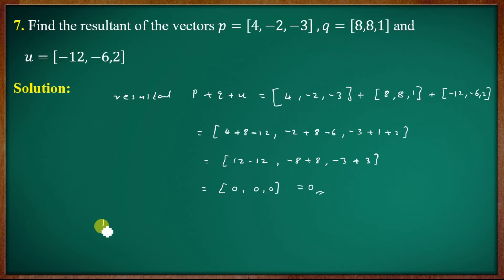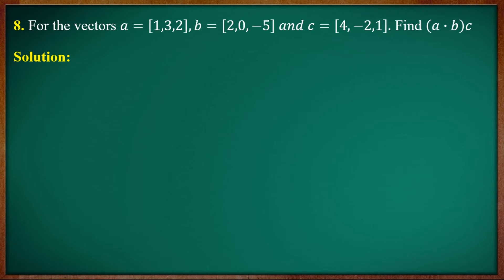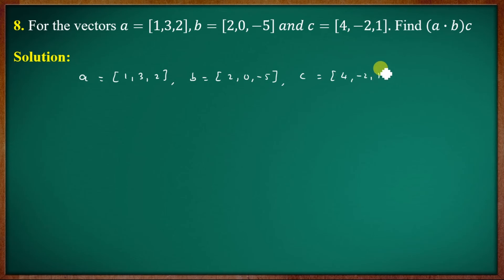Given vectors A = (1, 3, 2), B = (2, 0, -5), and C = (4, -2, 1), find A·B times C. First compute A·B = 1×2 + 3×0 + 2×(-5) = 2 + 0 - 10 = -8.